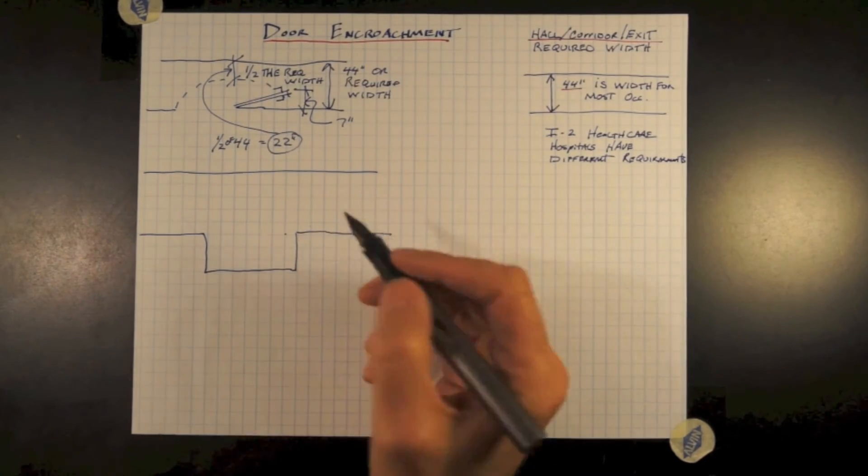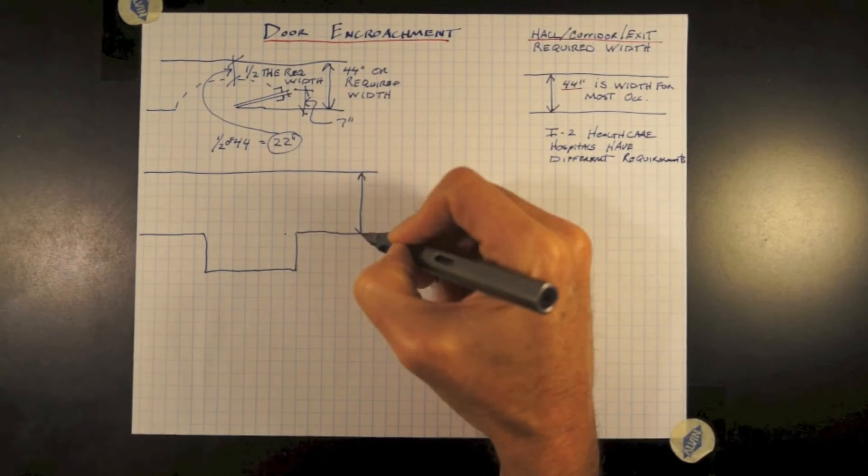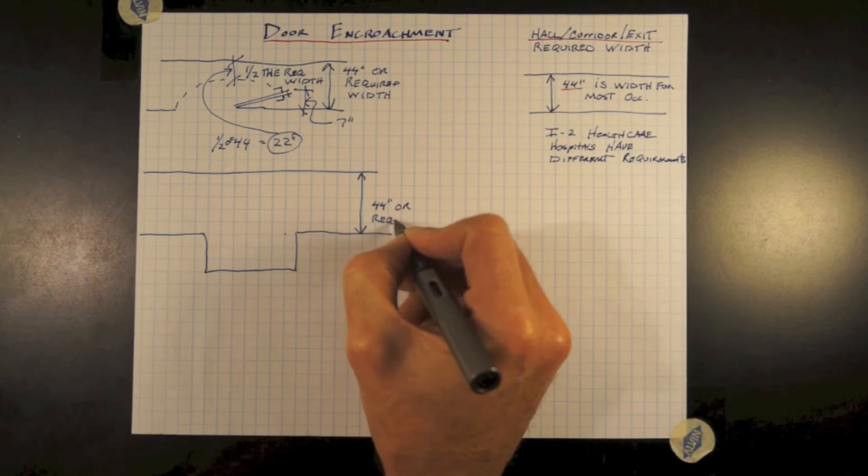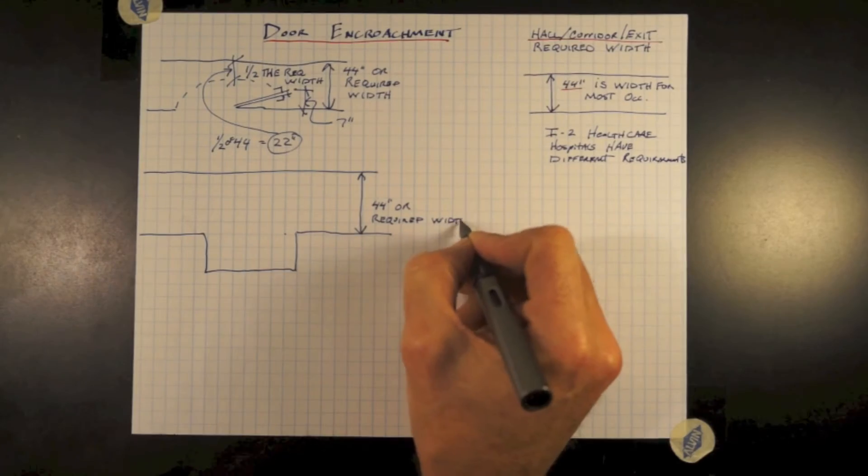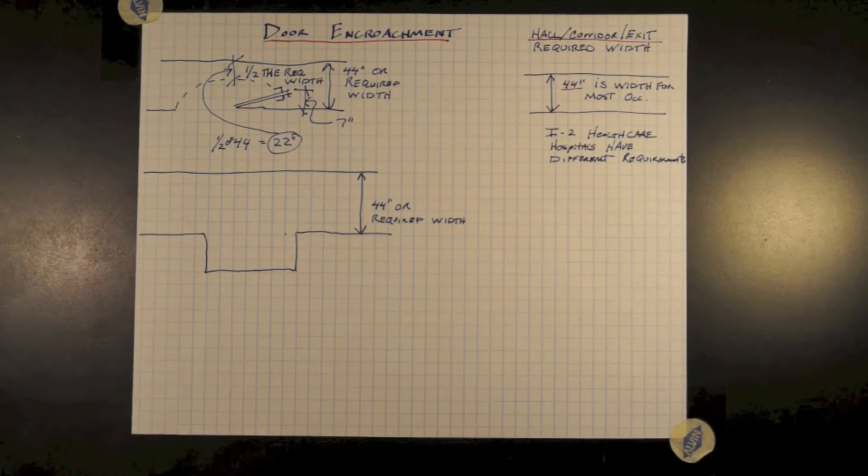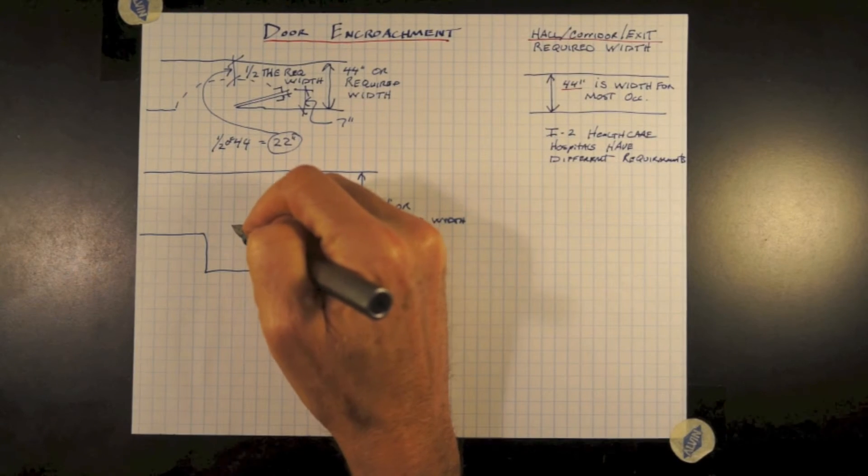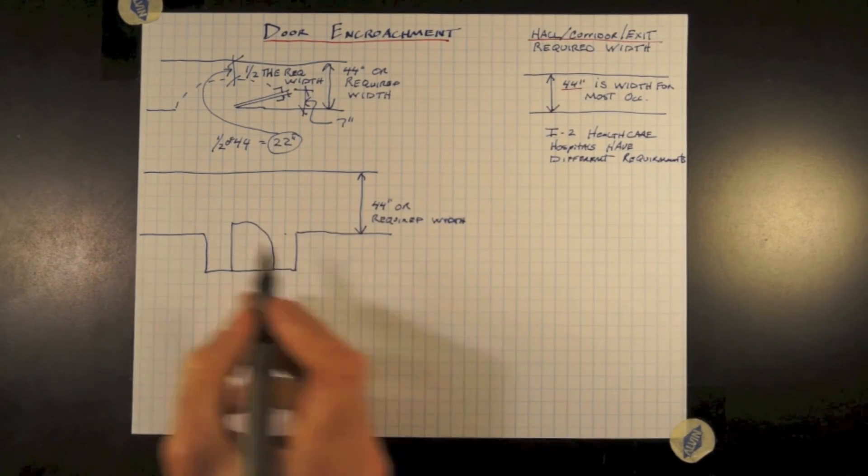Another scenario is a door that is pocketed still swinging into the corridor, hallway, or exit passageway. Assuming our width is 44 inches, our door swinging out of the space, the door may protrude into the required width by nothing greater than 7 inches.